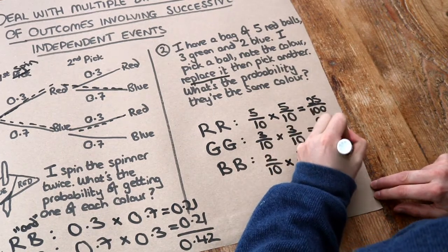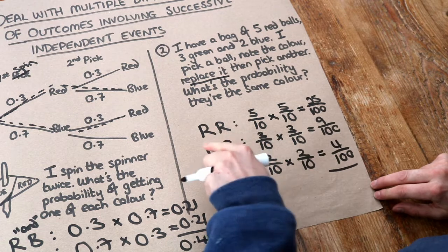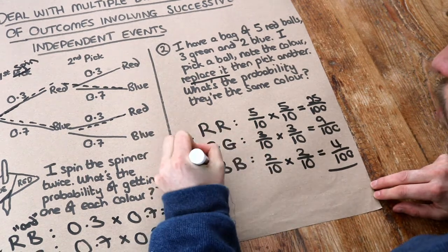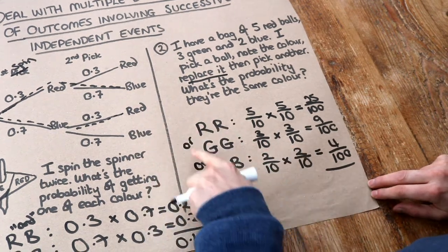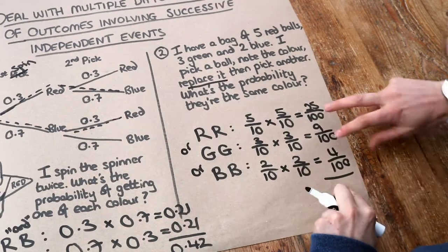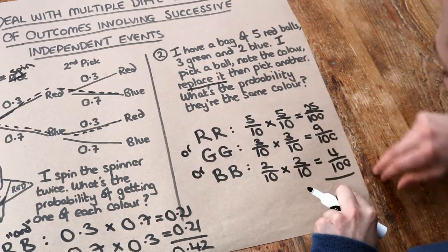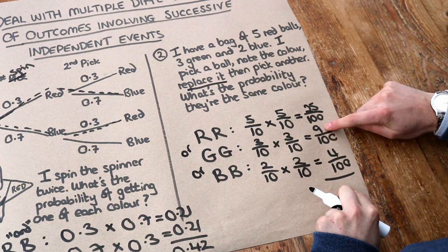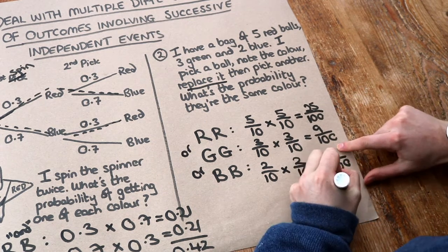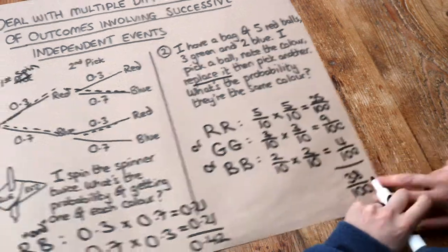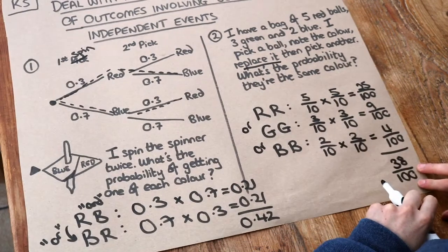Now we want the probability of getting red and red, or green and green, or blue and blue. We use 'or', so we add these together. They have the same denominator, so we just add the numerators: 25 plus 9 is 34, plus 4 is 38. So it's 38 over 100, or if you prefer, 0.38.